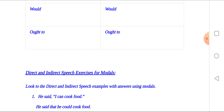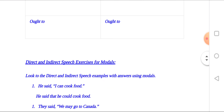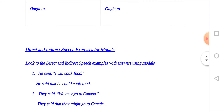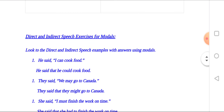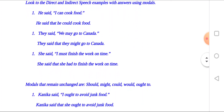Direct and indirect speech exercises for modals. He said, 'I can cook food.' — He said that he could cook food. He said, 'We may go to Canada.' — They said that they might go to Canada. She said, 'I must finish the work on time.' — She said that she had to finish the work on time.